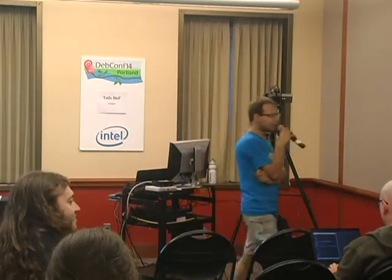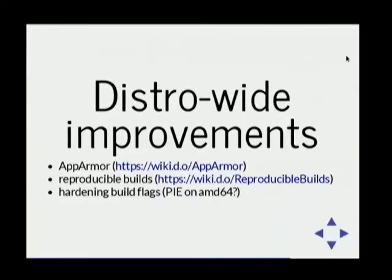These are new contributors and they need to be helped — mentored, pointed to the right documentation, and their packages need to be sponsored. We already have a few people in this room doing this kind of work and I'd like to warmly thank them, and we need more. If you have more time, a great way to help Tails is to improve Debian globally — like adding AppArmor support or improving it, working on reproducible builds, improving hardening build flags coverage, and maybe making the default set of flags a bit stricter on architectures that can hold it, like PIE.